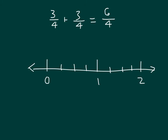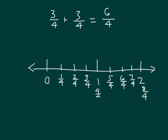Let's label those parts — count with me: one-fourth, two-fourths, three-fourths. One would be four-fourths. And we have five-fourths, which is also equal to one and a fourth; six-fourths; seven-fourths; and eight-fourths, which is equal to two. Let's go ahead and mark those fours on our number line as well.